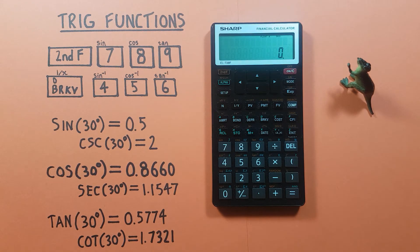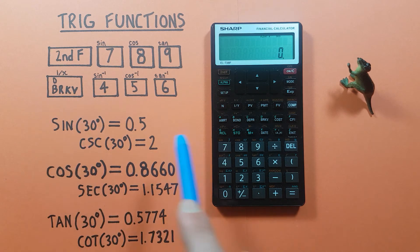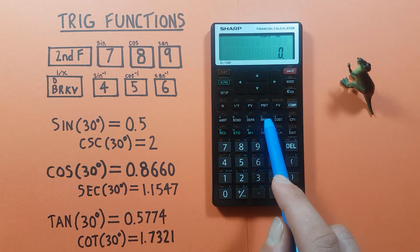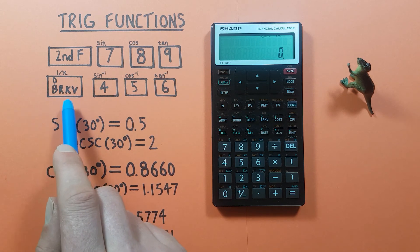We can also determine cosecant, secant, and cotangent on this calculator by using the inverse key. That's the brkv key right here. It looks like this, located here. To do this we first do the associated sine, cosine, or tangent function, and then inverse it with this key.